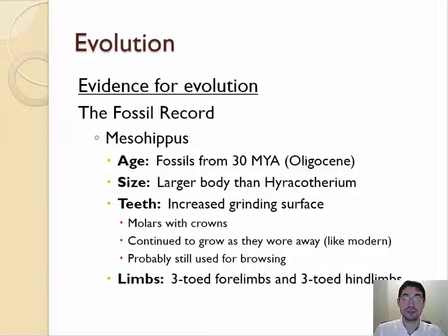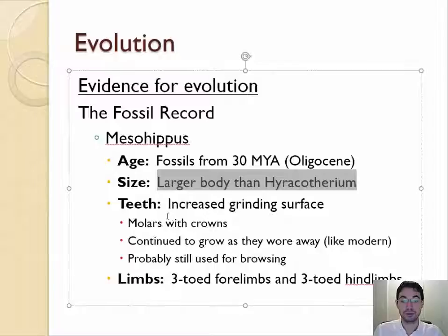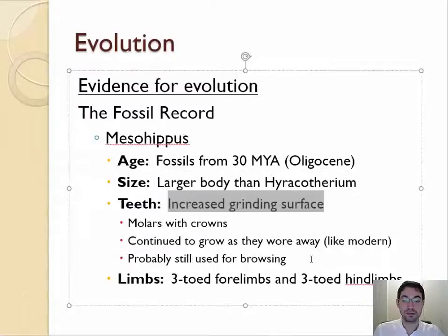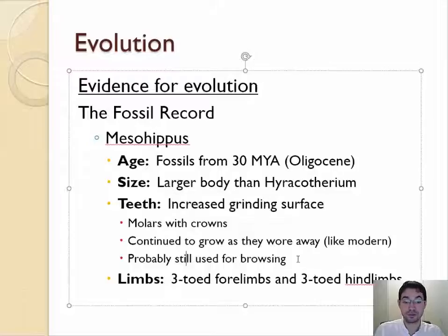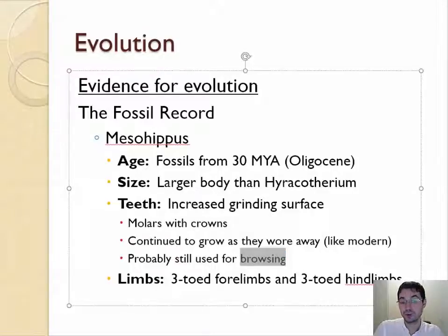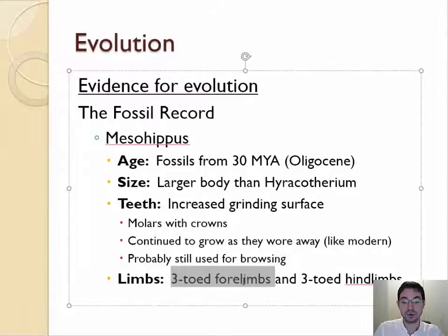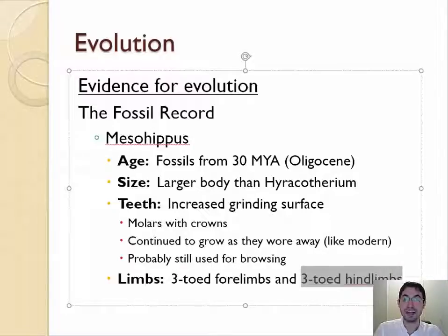30 million years ago, 10 million years later, we have Mesohippus, which was larger than Hyracotherium with bigger, flatter teeth — probably still used for eating leaves but could start to eat grasses as well. The number of toes in the front legs is the same, but in the back legs they've lost a toe.